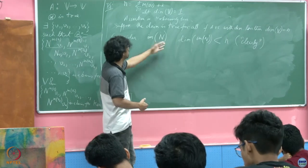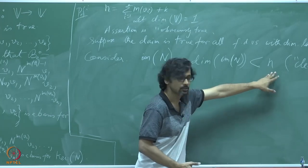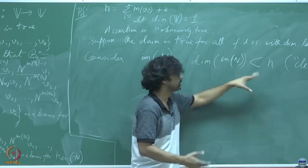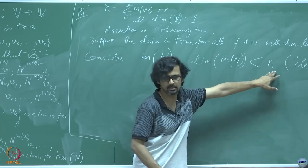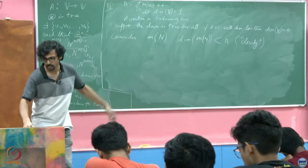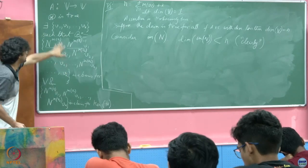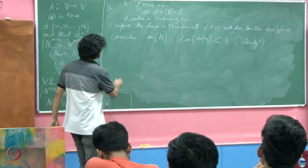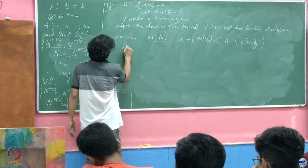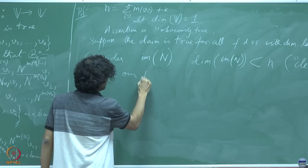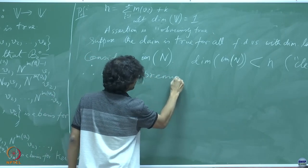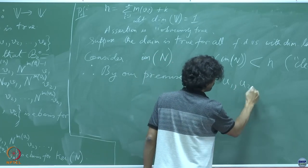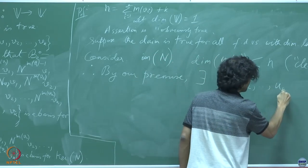If the kernel is non-trivial, the rank cannot be full rank. If the rank cannot be full rank, then the image cannot span the entire vector space V. So by the rank-nullity theorem, the dimension of the image must be less than n. Therefore, by our premise, there exist u_1, u_2, ..., u_{k̂}.